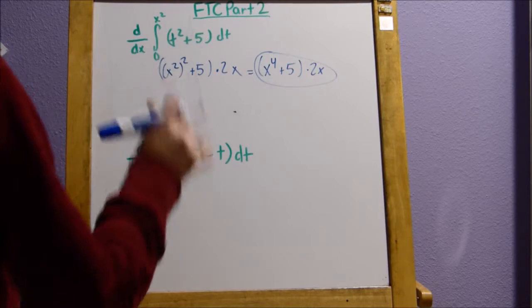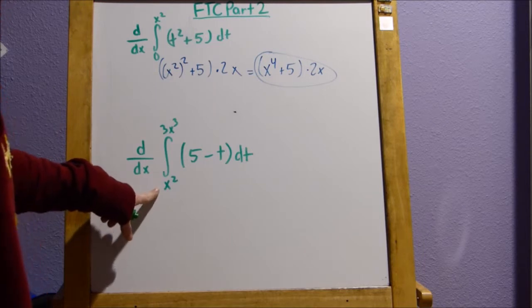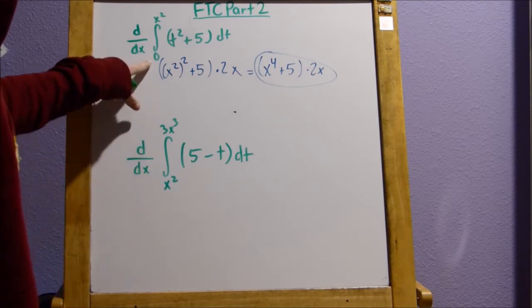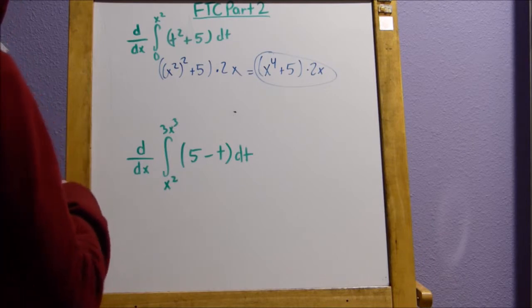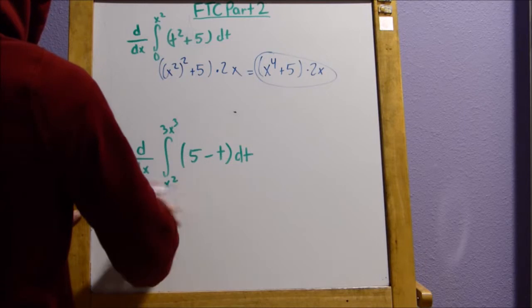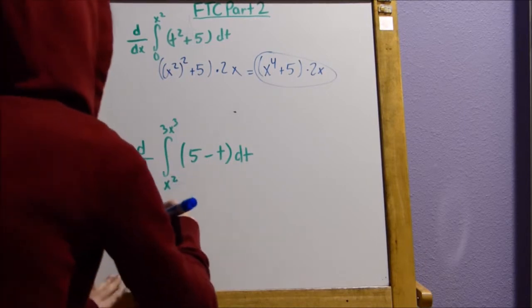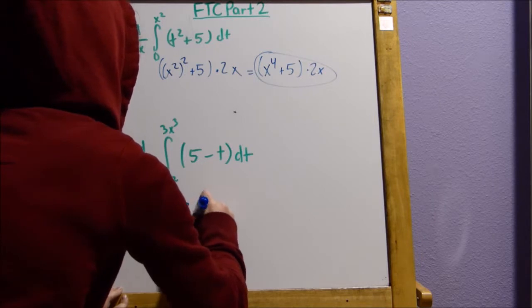Now, this one. See, this one is the hardest of them all so far because this one has an x here too. It's not just zero. So, you're going to have to deal with this too. So, the first step that I like to do is always just plug in this number for t and then worry about this later. So, it's going to be five minus three x cubed.